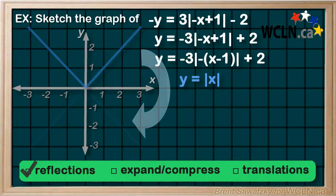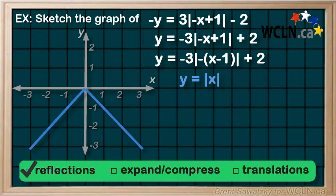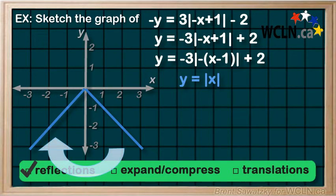Our vertical reflection has us rotating the graph around the x-axis. The horizontal reflection has us rotating the graph around the y-axis, which in this case doesn't really have any impact.